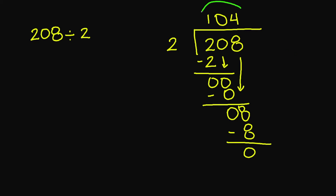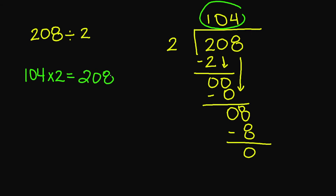This is my quotient here. To check my answer, I'm going to multiply 104 times 2, and that's going to equal 208, which is the same as your dividend right here.